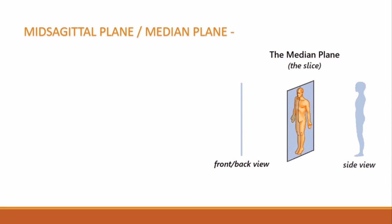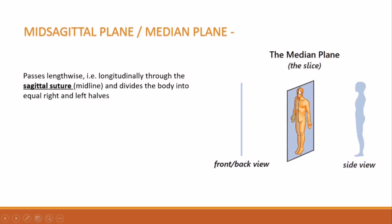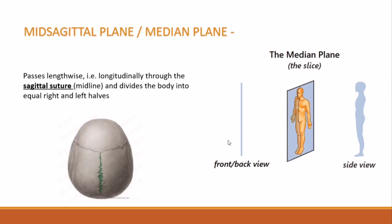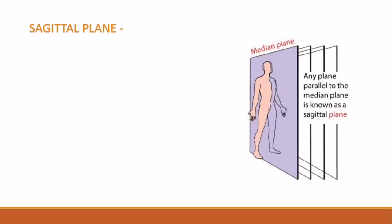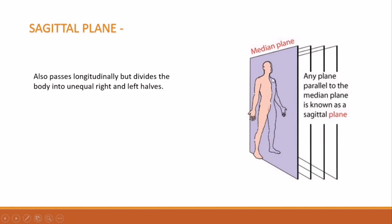First is the mid-sagittal or median plane. This plane passes lengthwise, that is longitudinally, through the sagittal suture or midline and divides the body into equal right and left halves. On the surface the halves are generally symmetrical, but the same symmetry does not apply to all internal structures. The sagittal suture is the midline articulation that joins the two parietal bones.